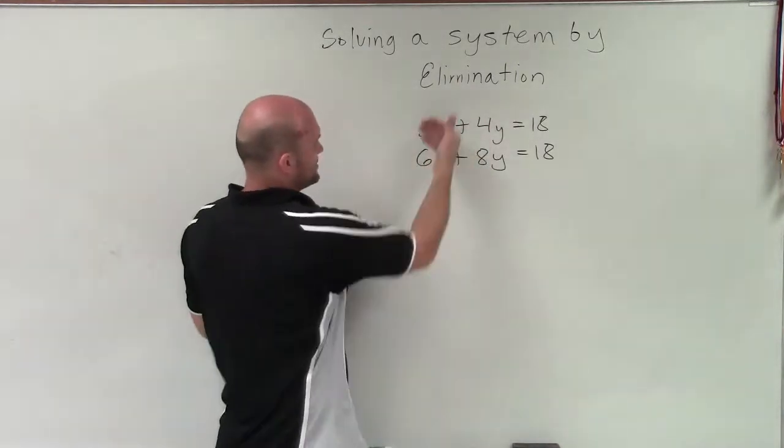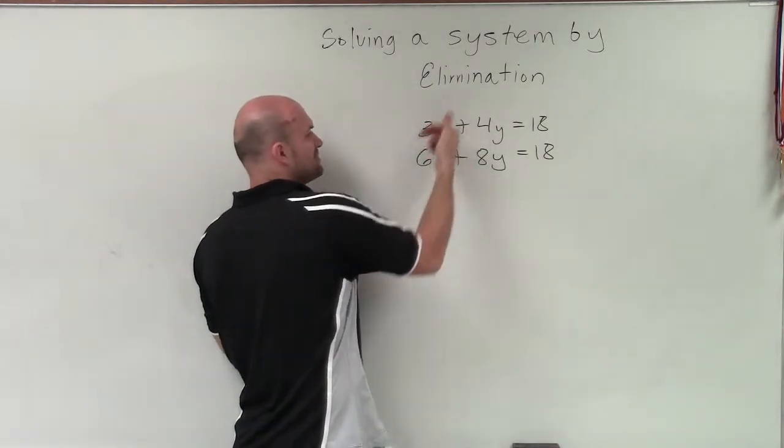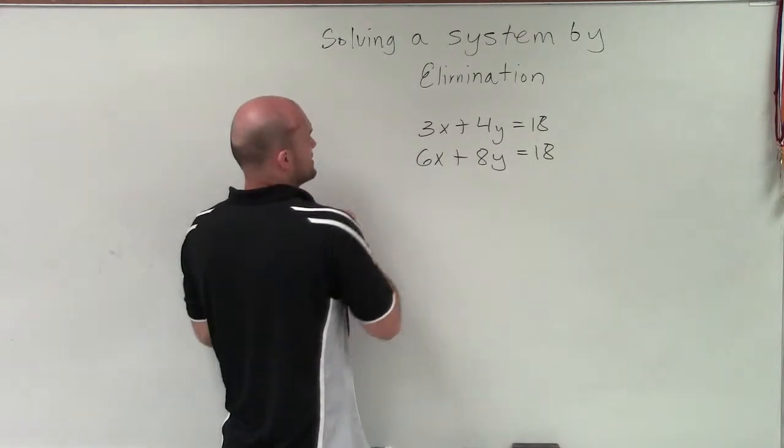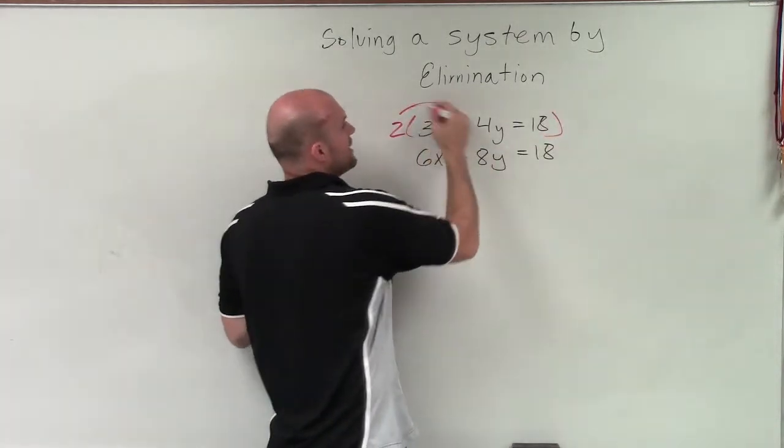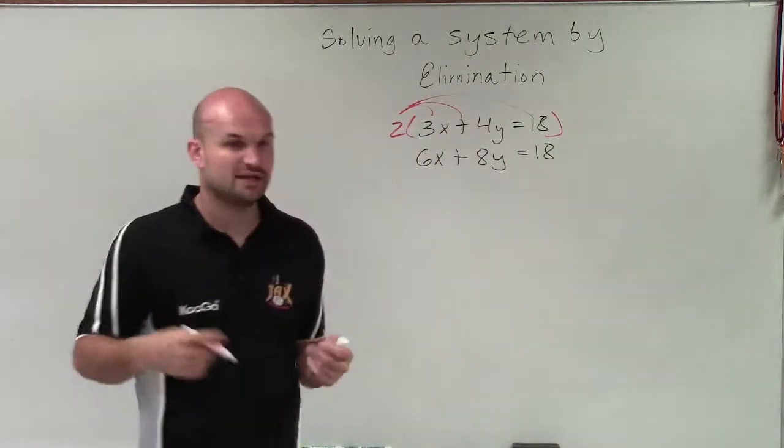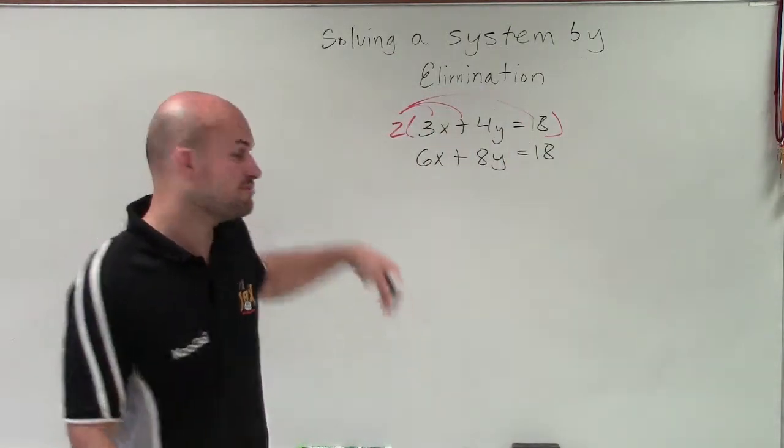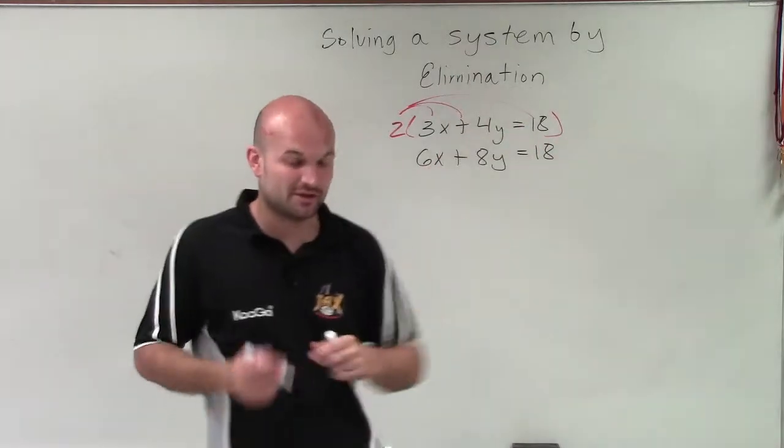Let's say I want to eliminate the x. The least common multiple between 3 and 6 is 6, so I'll multiply the top by 2. When creating a new equivalent equation, we need to multiply our multiplier by everything on our equation.